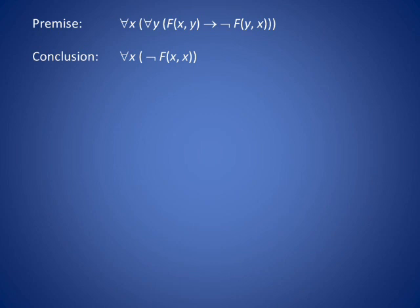So, either F of X and Y is false or F of Y and X is false. This must be the case for every X and Y, in particular, when X and Y are the same.